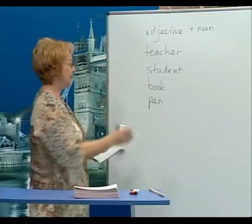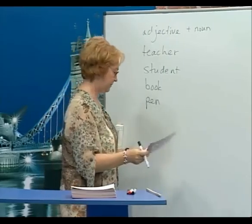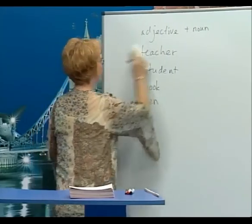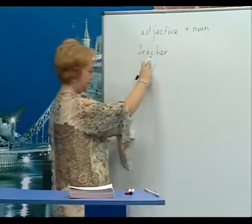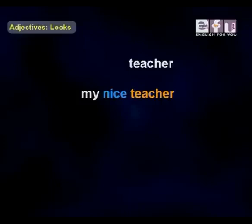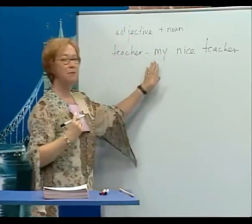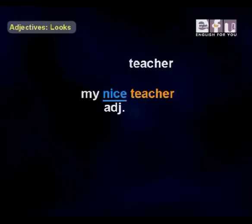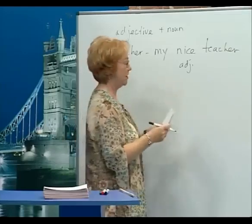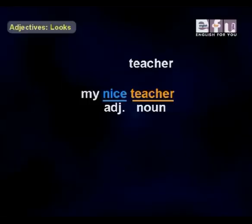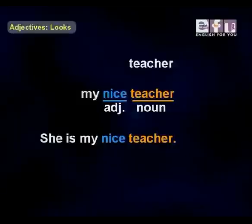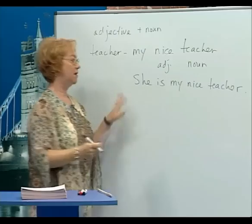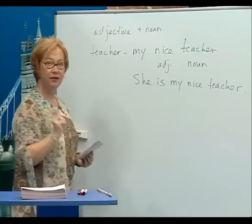Adjectives come before the nouns and after some verbs. Here's the noun 'teacher': my nice teacher — 'nice' is the adjective, 'teacher' is the noun. Here's a sentence: she is my nice teacher.